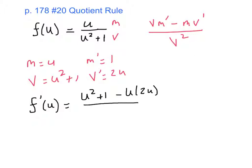And then, in the denominator, we have v squared. As I've mentioned before, I'm not going to bother expanding that product. So basically, I think you'll see that we have u squared plus 1 minus 2u squared over u squared plus 1 squared.